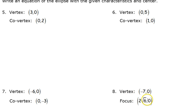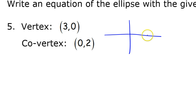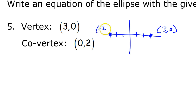Later I will show you how to write the equation if you're given a focus. For problem number 5, we're given that the vertex is (3, 0). That point is on the x-axis. Another vertex would be at (-3, 0). That is the a value, so a equals 3. The vertex is automatically the long way, so we're looking at a horizontal ellipse.